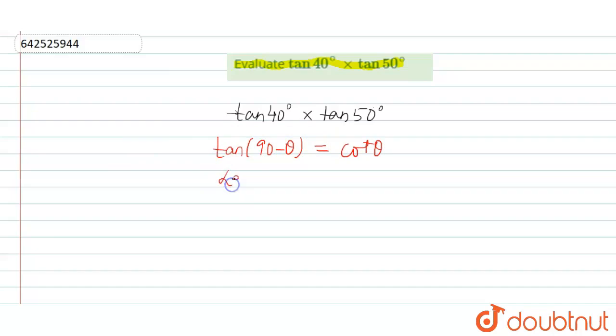Here let theta be 40 degree. So we get tan of 90 minus 40 degree is equal to cot 40 degree. That means tan of 50 degree is equal to cot of 40 degree.